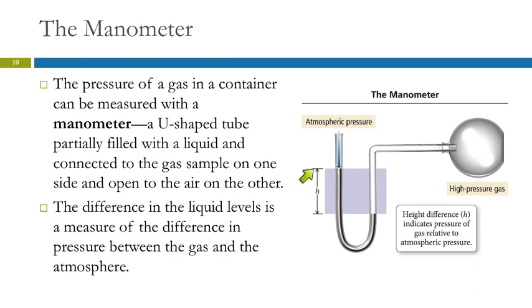We measure with a ruler the difference in height between the two columns of mercury. That gives us the difference in pressure between the inside of the container and atmospheric pressure. It doesn't give a direct absolute reading, but if we know the atmospheric pressure, we can calculate the pressure inside. This is also measured in millimeters of mercury. A student asks: why use millimeter of mercury units instead of atmospheres?